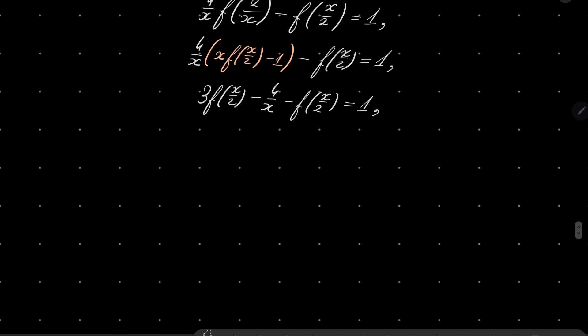Which means we have 4f(x/2) - 4/x - f(x/2) equals 1. So 3f(x/2) equals 1 plus 4/x, which means that f(x/2) equals 1/3 plus 4/(3x).